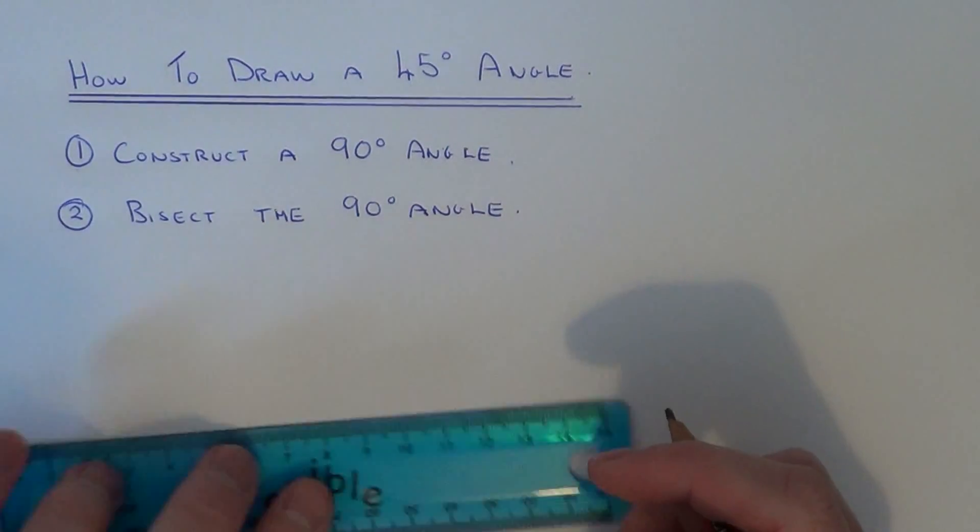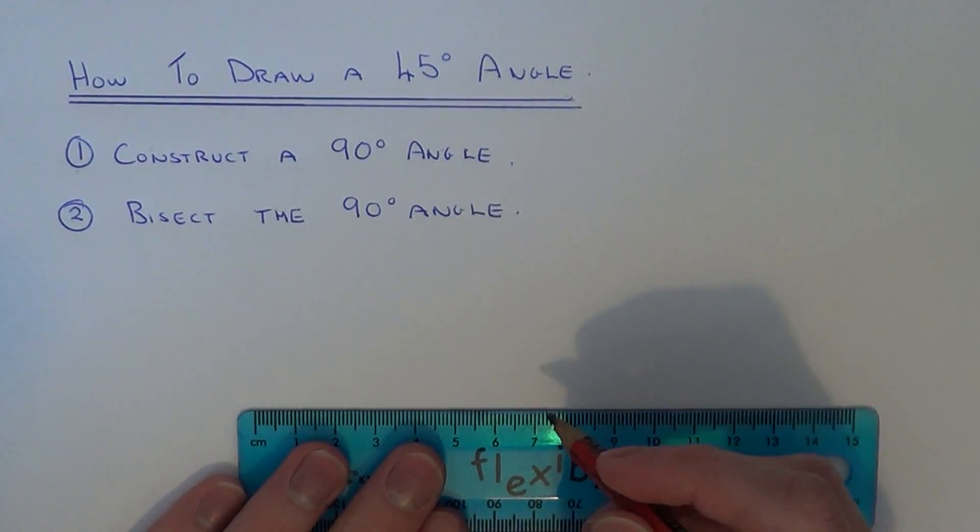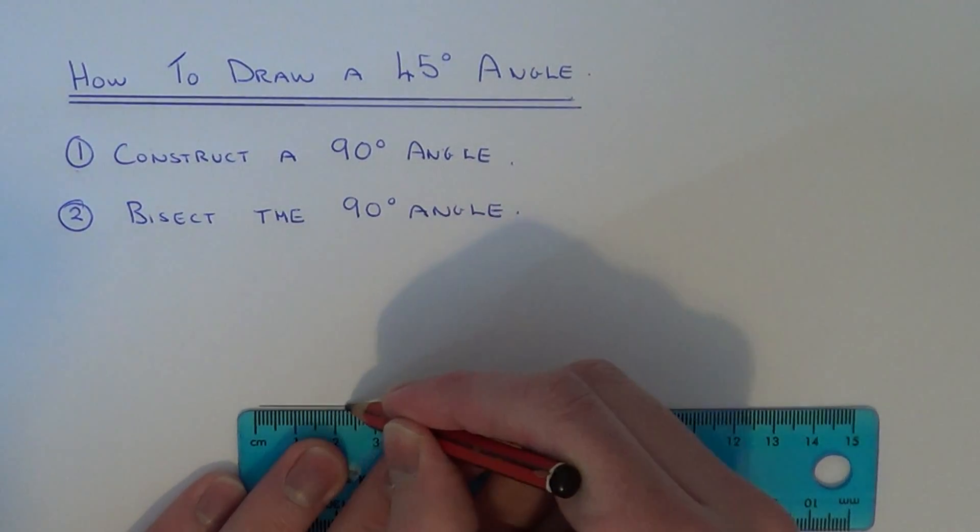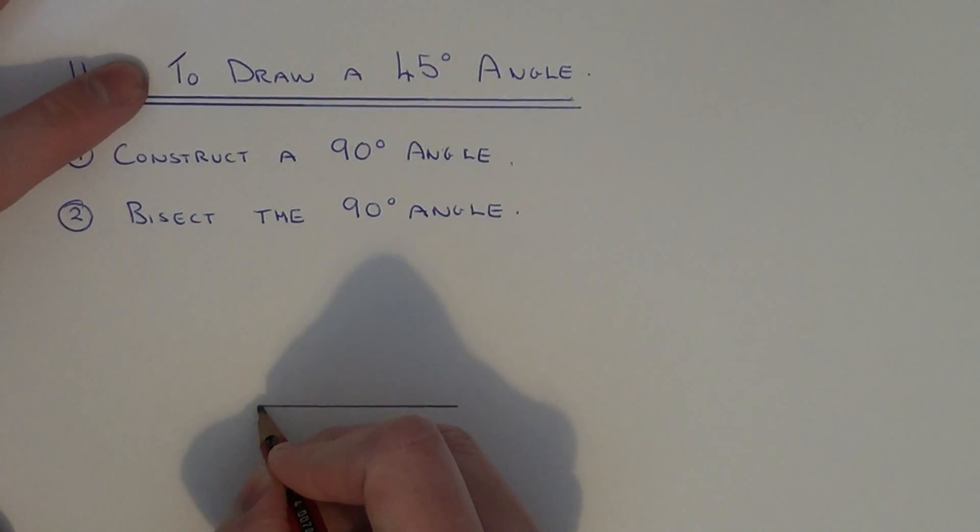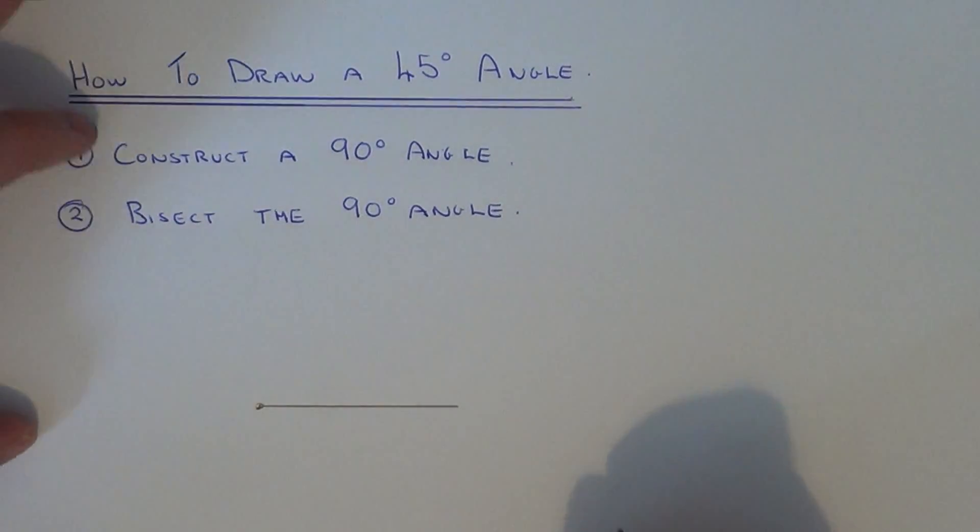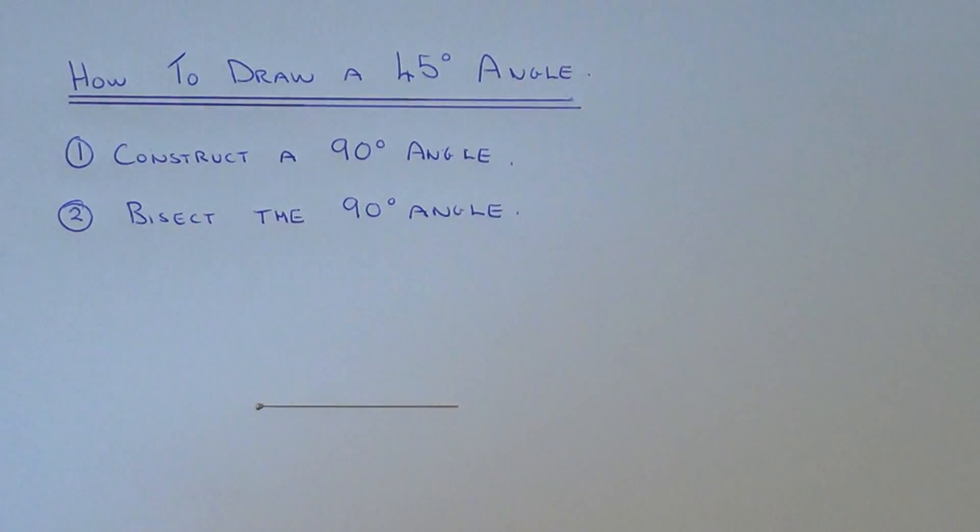Let's take a look at doing an example. We're going to construct a 45-degree angle at the end of this line. First of all, construct your 90-degree angle.